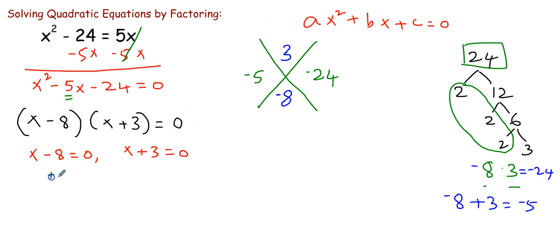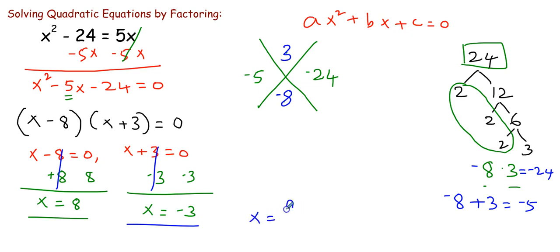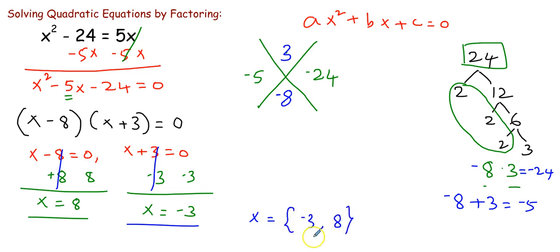So the factors of x² - 5x - 24 are (x - 8)(x + 3) = 0. Setting each factor to zero: x - 8 = 0 gives x = 8, and x + 3 = 0 gives x = -3. The solution set is {-3, 8}. Substituting either value back into the original equation gives a true statement.